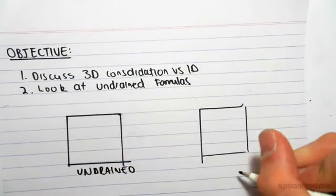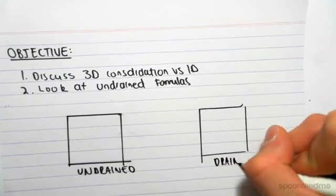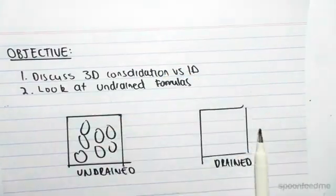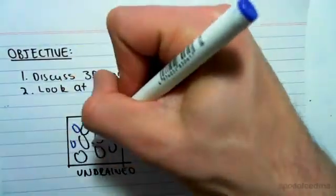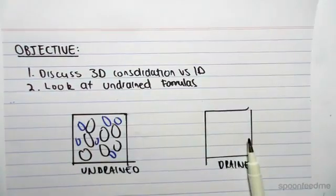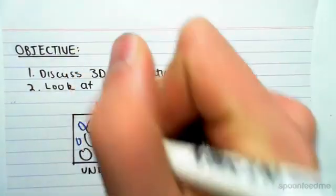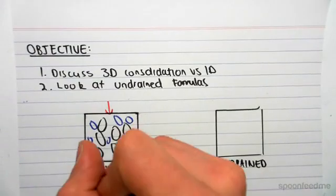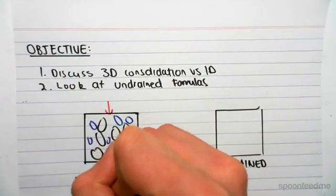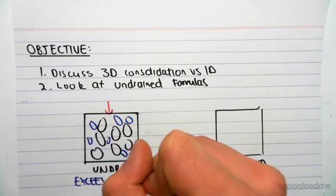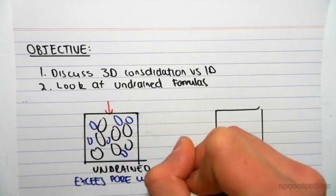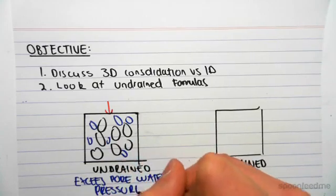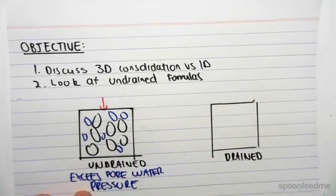As we know, we have solid soil particles, we have water, and we have pockets of air, and we'll apply a load. This load is felt all by the water, which means that we get a buildup of excess pore water pressure. We get an excess of pore water pressure because our sample is undrained.